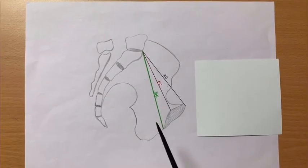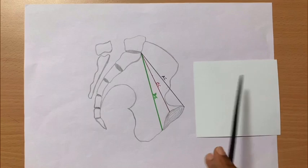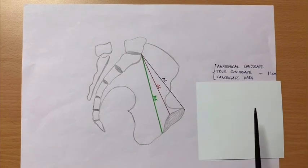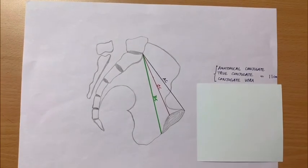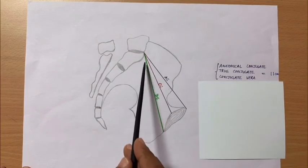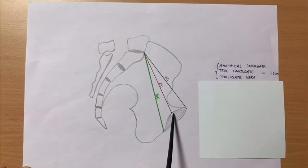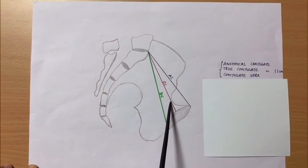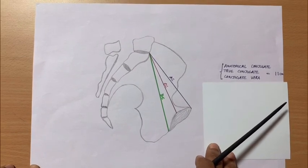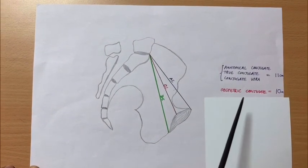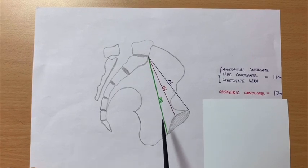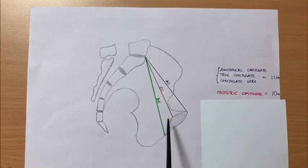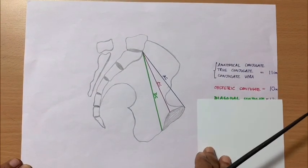There are three anteroposterior diameters of the inlet. The first is called the anatomical conjugate, also called the true conjugate or conjugate vera, measuring 11 cm. The second is the obstetric conjugate, which runs from the sacral promontory to the most prominent point on the inner surface of the pubic symphysis, measuring 10 cm — this is of interest to the obstetrician. The third is the diagonal conjugate, which starts from the sacral promontory to the lower border of the pubic symphysis, measuring 12 cm.